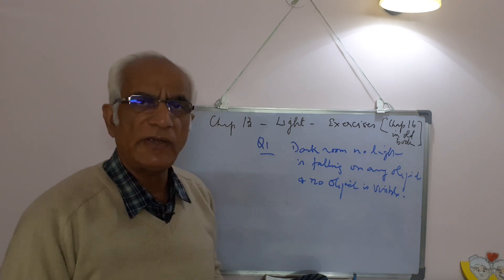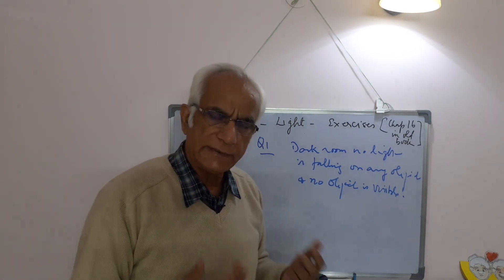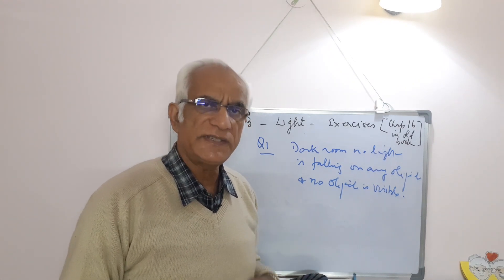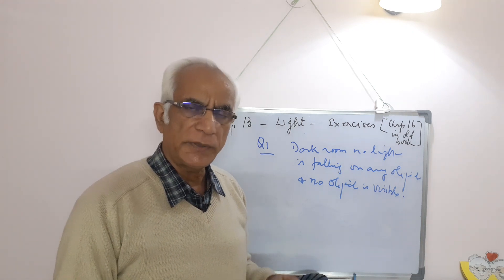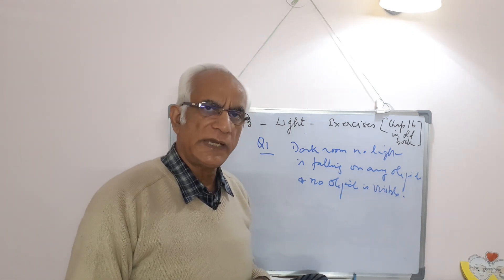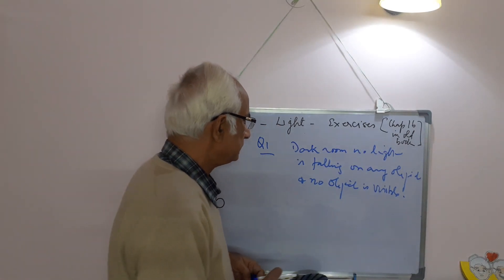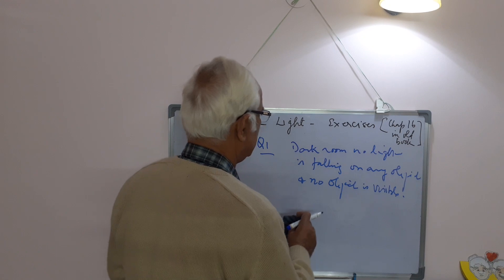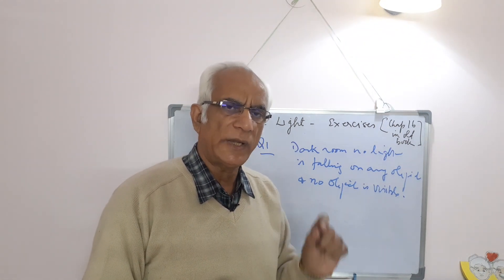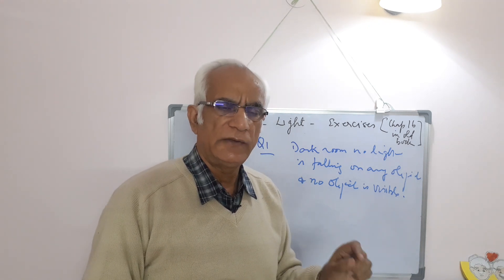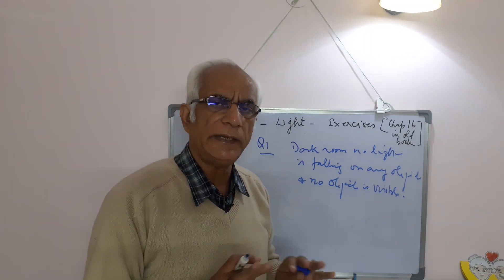Outside the room, you can see things because there is light outside. Light is falling on objects and the objects are visible. They appear of different colors because different objects reflect different colors. So in a dark room, no light is falling on objects and no object is visible. An object becomes visible only when light falls on it.